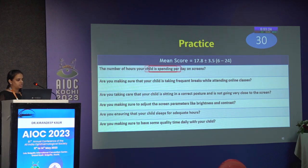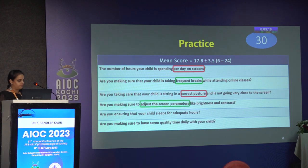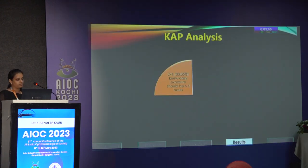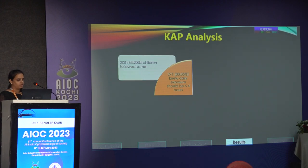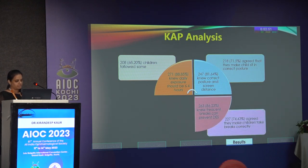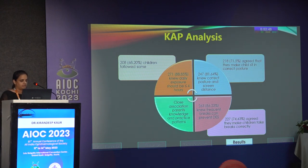The practice questions addressed how many hours children were spending on screens, whether they were taking frequent breaks, sitting in correct posture, and whether parents were adjusting screen parameters related to sleep. The practice scores were 17.8 out of 30. 88% of parents agreed daily exposure should be limited to less than four hours, and 68% of children were following the same. 82% of parents knew the importance of correct posture and screen distance, and 72% of their children were following the same. 86% knew the importance of taking frequent breaks, and 74% of the children were taking breaks correctly.